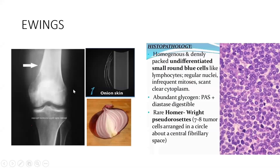The characteristic picture of Ewing's sarcoma is the onion skin type appearance. There is a periosteal reaction — a periosteal reaction that looks like an onion skin. One more characteristic of Ewing's sarcoma histologically is Homer-Wright pseudorosettes. You have to memorize it as a characteristic finding.